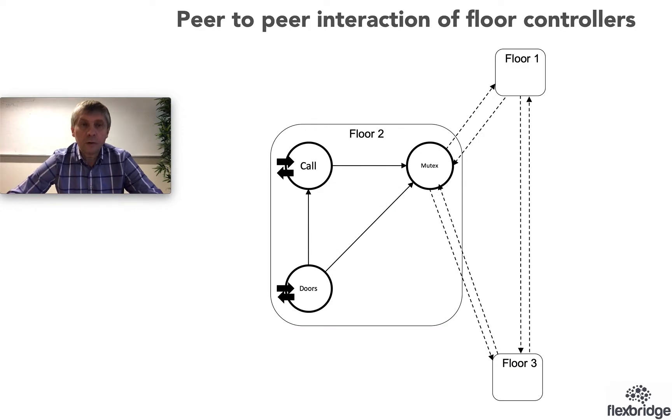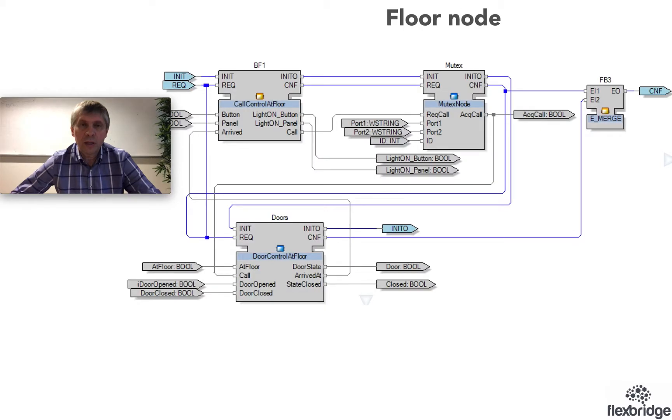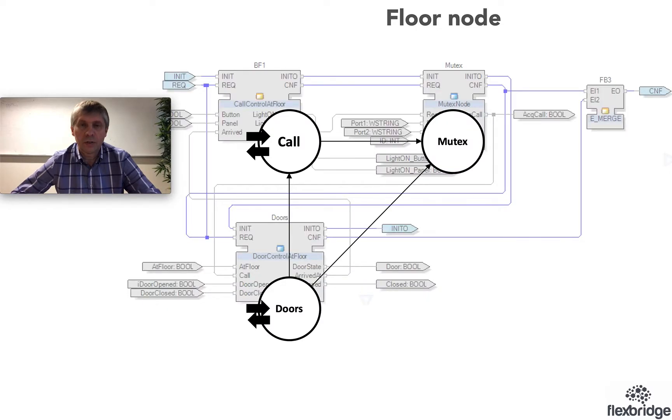One single floor node, what is it? It has a function of receiving button calls, it has a function of operating with the doors at the floor, and also a function of negotiating with the other floor nodes. This can be represented as these three circles on screen inside the floor 2 node, and exactly the same will be the structure of the function block application. One function block connected to buttons, another block receiving signals from a door, and then the mutex node that is doing negotiation.